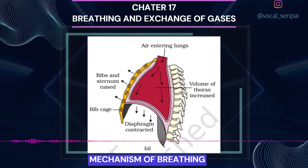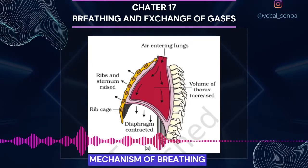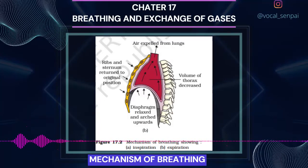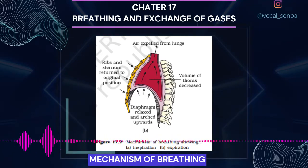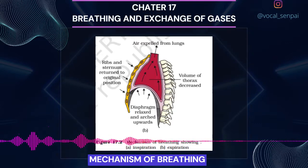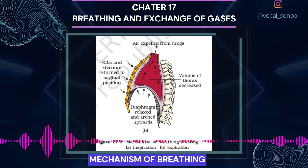Inspiration is initiated by the contraction of the diaphragm which increases the volume of the thoracic chamber in the anteroposterior axis. The contraction of external intercostal muscles lifts up the ribs and the sternum, causing an increase in the volume of the thoracic chamber in the dorsal-ventral axis. The overall increase in thoracic volume causes a similar increase in pulmonary volume. An increase in pulmonary volume decreases the intrapulmonary pressure to less than the atmospheric pressure, which forces the air from outside to move into the lungs, i.e., inspiration. Relaxation of the diaphragm and the intercostal muscles returns them to their normal positions and reduces the thoracic volume and thereby the pulmonary volume. This leads to an increase in intrapulmonary pressure to slightly above the atmospheric pressure, causing the expulsion of air from the lungs, i.e., expiration.